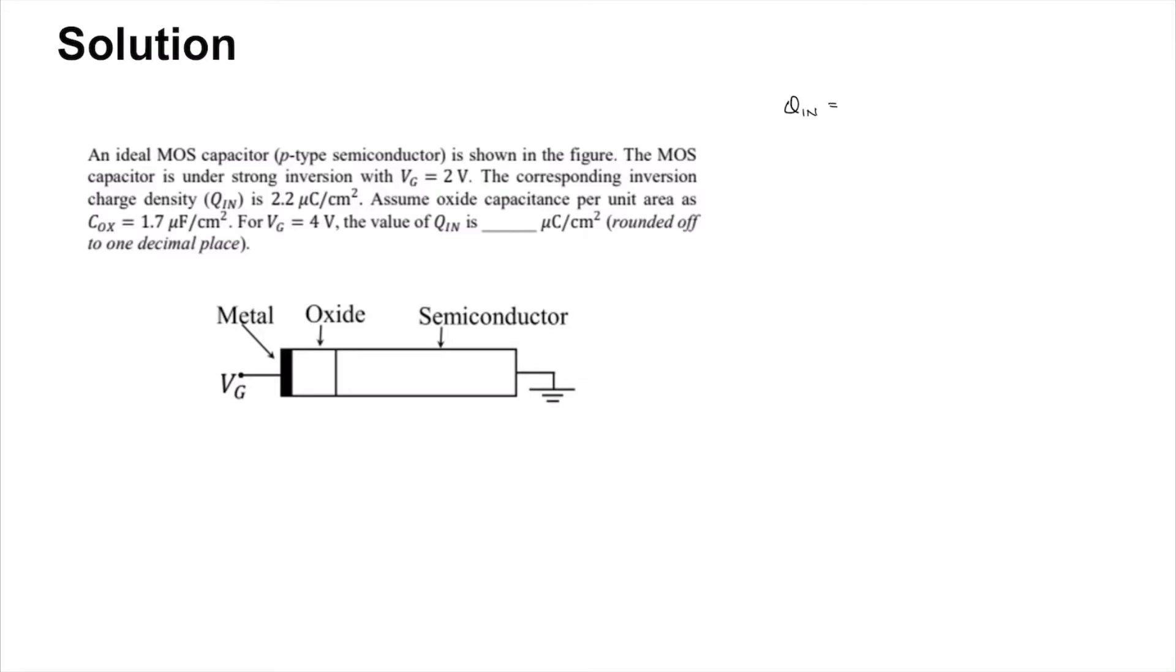as the oxide capacitance times VGB minus VTH, where VGB is the gate to body voltage. But given that the body is grounded, this is Cox times VG minus VTH, where VTH is the threshold voltage. First, we are given